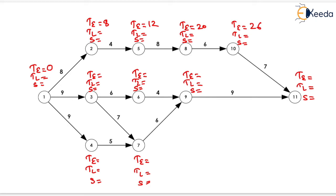For event 3, TE = 0 + 9 = 9. For event 6, TE = 9 + 6 = 15. For event 4, TE = 0 + 9 = 9. For event 7, TE = max(9 + 5, 9 + 7) = max(14, 16) = 16. For event 9, TE = max(15 + 4, 16 + 6) = max(19, 22) = 22.